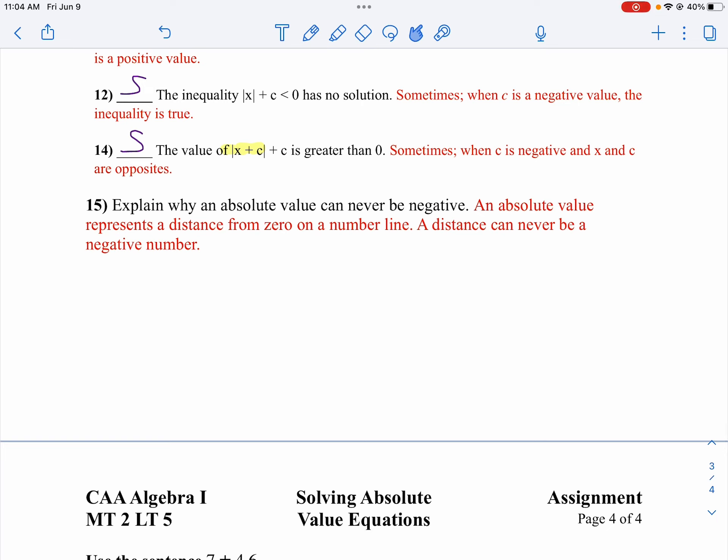To explain why an absolute value can't be negative, remember, absolute value, the key I'm looking for in your answer is you have to have the words distance from zero or magnitude from our seminar. Magnitude is always positive, so distance can't be a negative number.